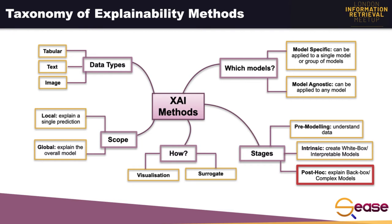For text, explainability can tell us which words in a block of text contributed most to a model prediction. For images, explainability can highlight the specific pixel or region in an image that causes a model to predict a certain label. An important separation of explainability methods is based on the type of algorithms they can be applied to. If their application is only restricted to a specific family of algorithms, these methods are called model-specific, such as tree explainer and various techniques applied to deep learning models. In contrast, methods that can be applied to every possible algorithm are called model-agnostic, and these approaches are essentially black-box explainers — often very effective and straightforward to implement, but this can come at the cost of less explainability than model-specific techniques.